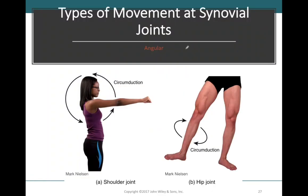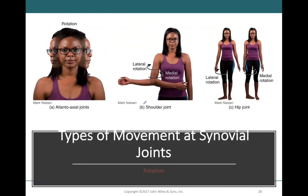Circumduction is where we move the distal part of our limb in a circle. The proximal side of our arm serves as the origin, while the distal part moves in a circle. We can do circumduction with both arms and legs.